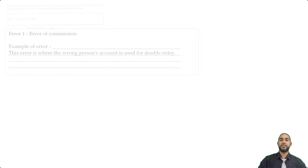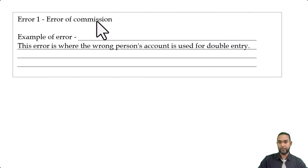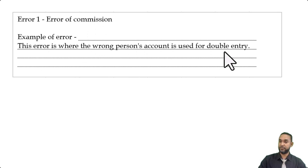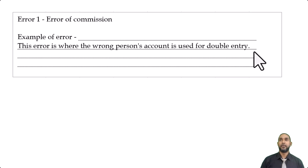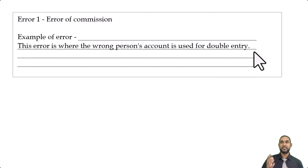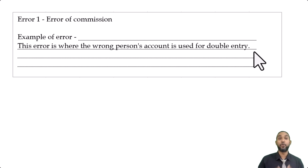Error of commission: this is where the wrong person's account is used for double entry. For example, if you have accounts for D. Lee (Daisy) and B. Lee (Bruce), and you made a sale to Bruce but recorded it in Daisy's account — that's an error of commission. The wrong personal account is used to record the transaction.